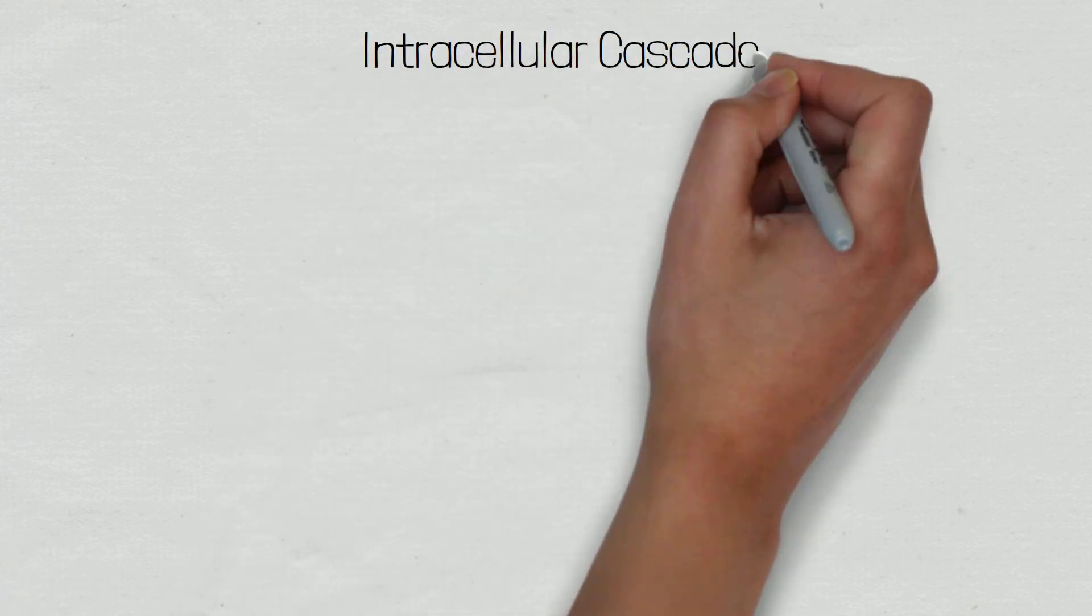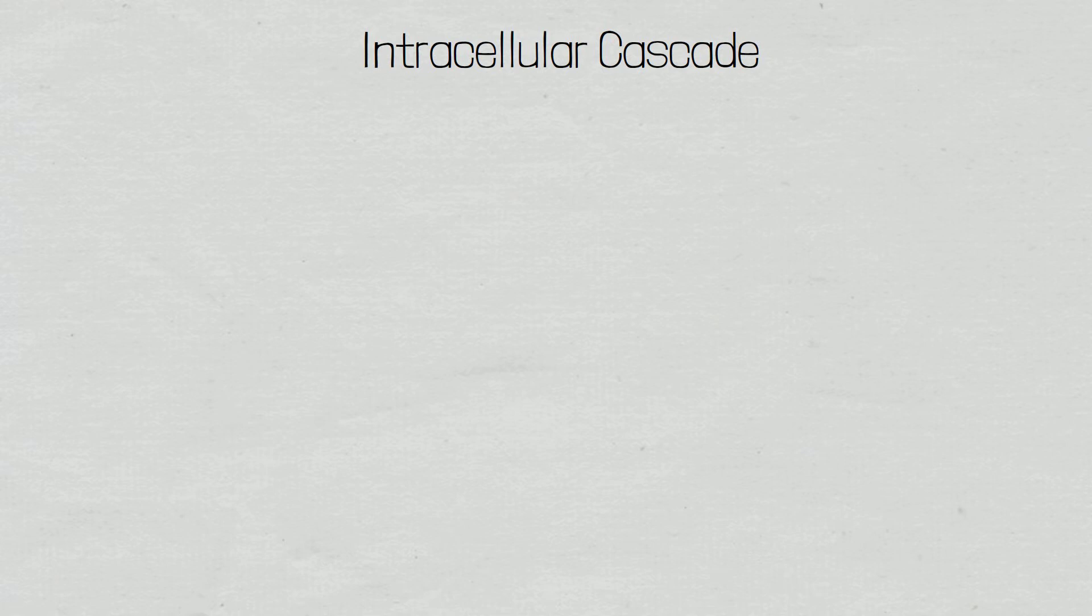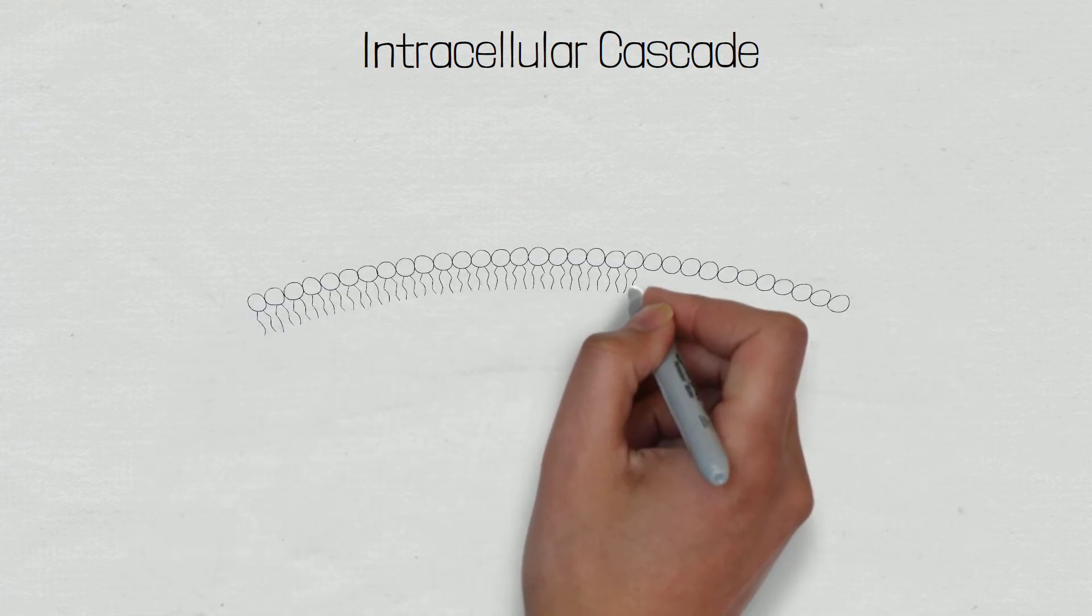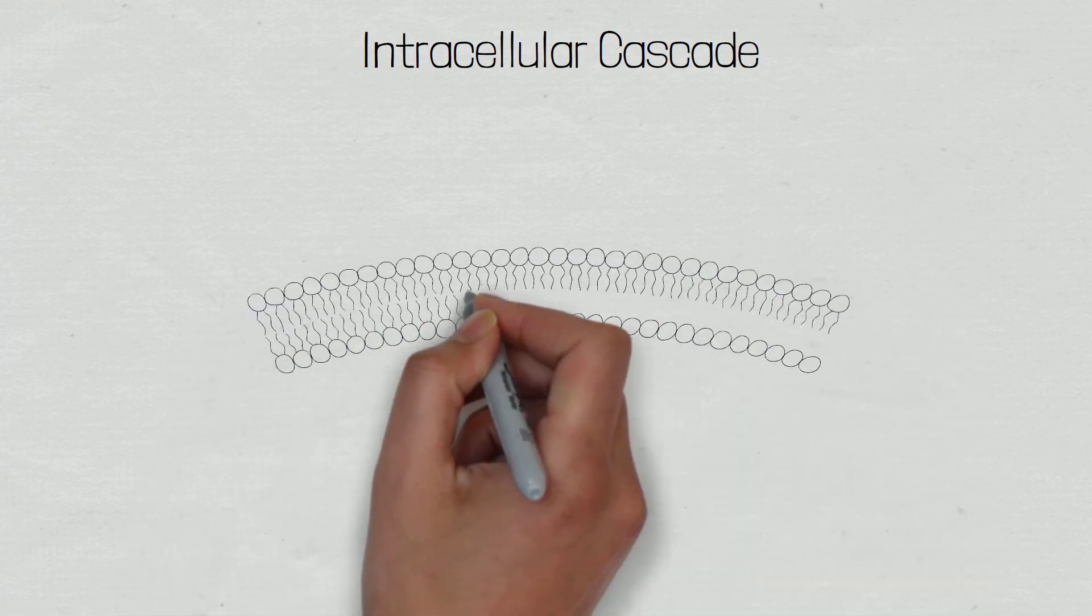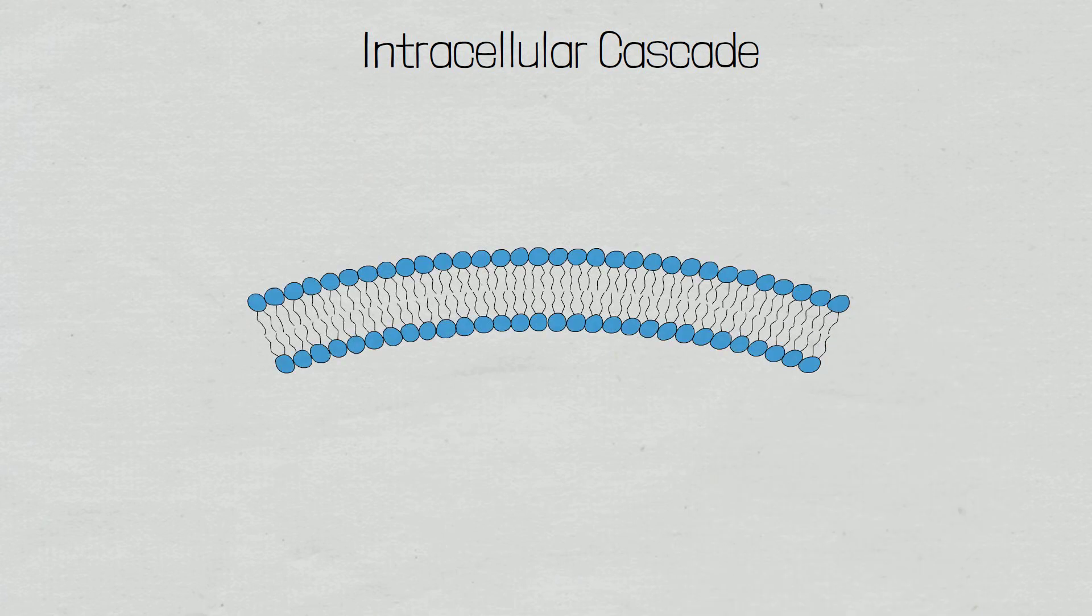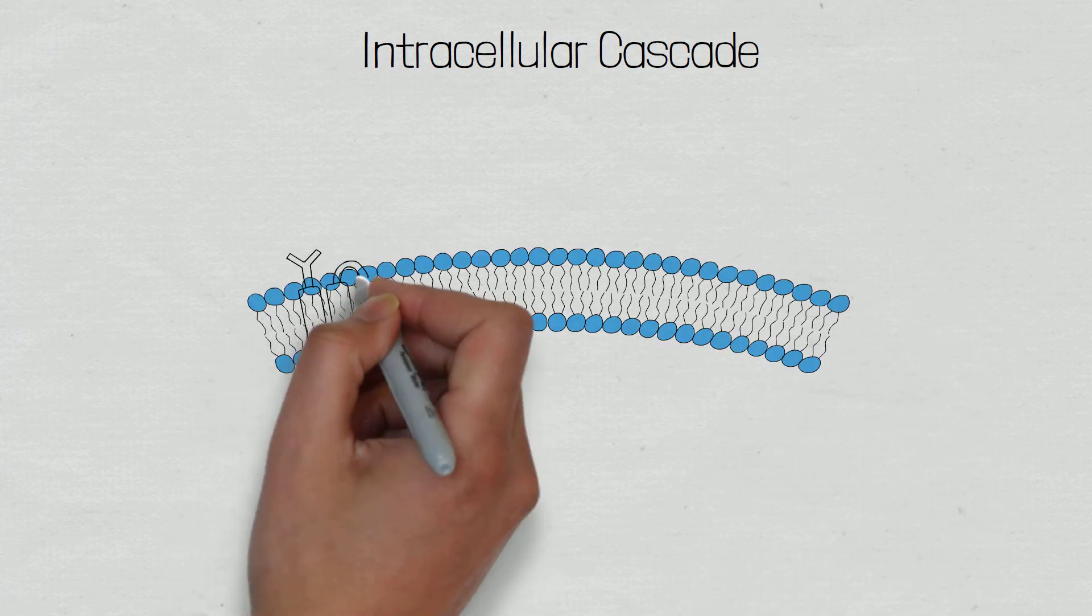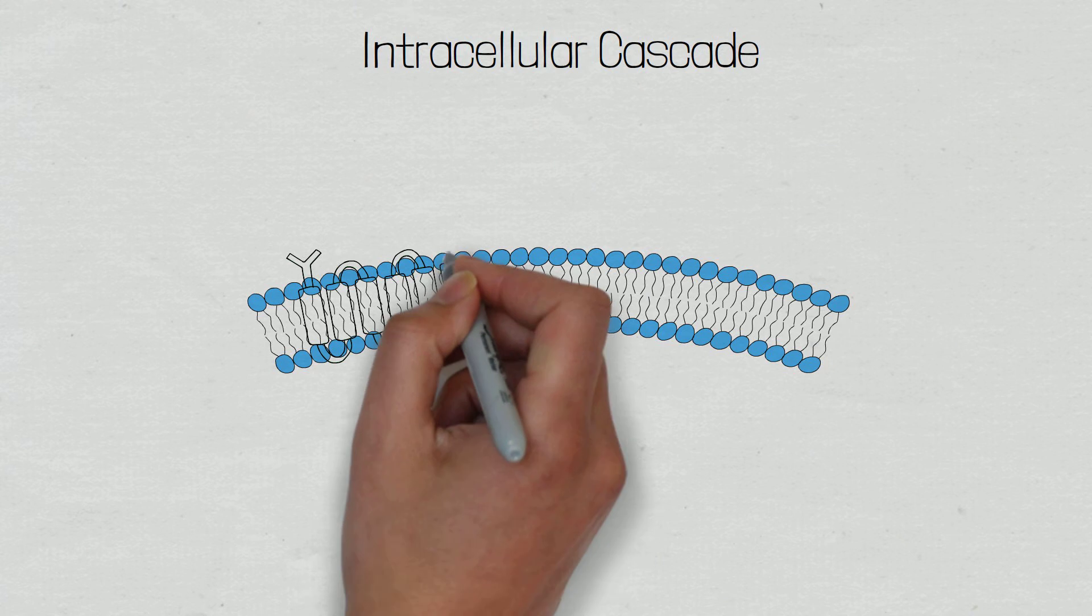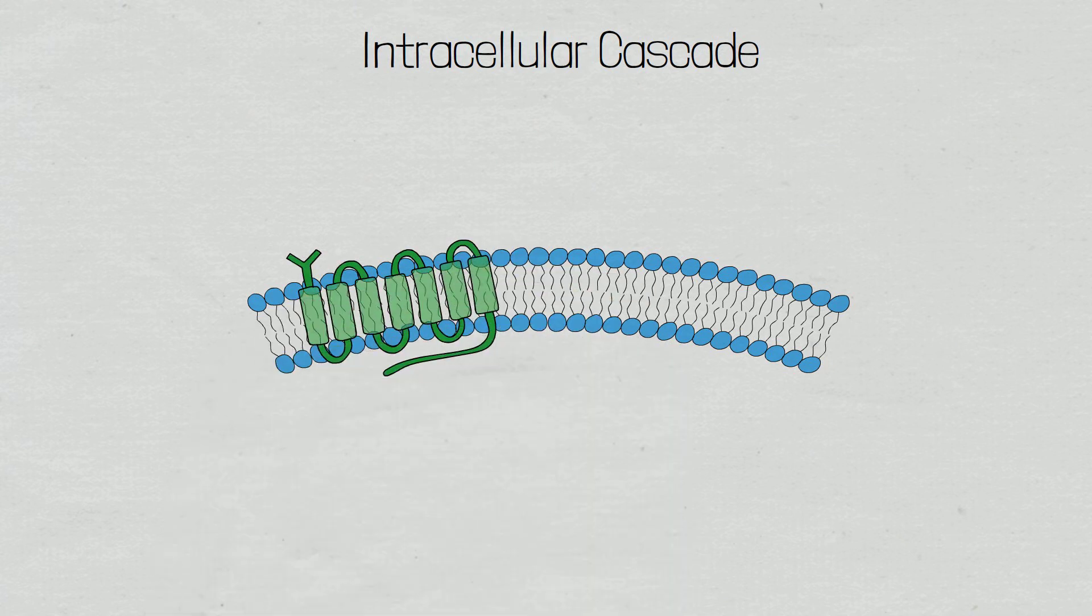Now let's look at the intracellular cascade that takes place when acetylcholine binds to a muscarinic type 3 receptor, so that we can understand how ipratropium bromide works and the pathway in which it is inhibiting. In understanding the clinical application of ipratropium bromide, this part isn't important, so feel free to skip ahead.